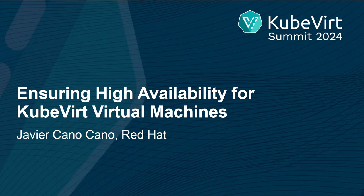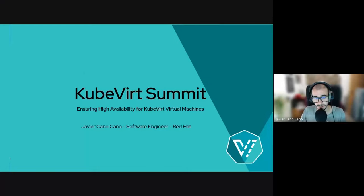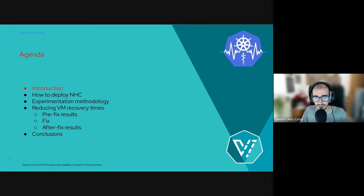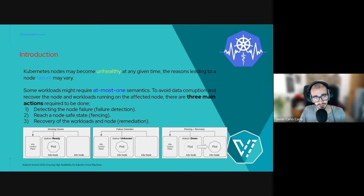Hi, my name is Javier Cano-Cano, software engineer at Red Hat, and today I'm presenting: ensuring high availability for Kubernetes virtual machines. This is the agenda we are going to follow throughout this presentation, and first of all, an introduction.